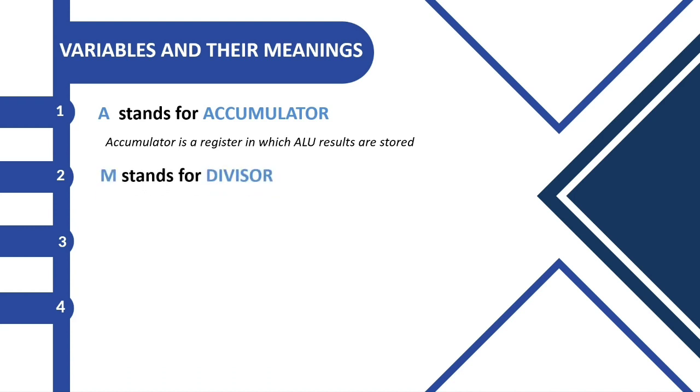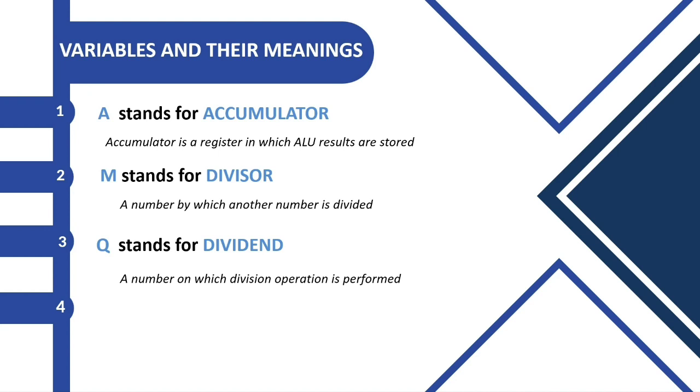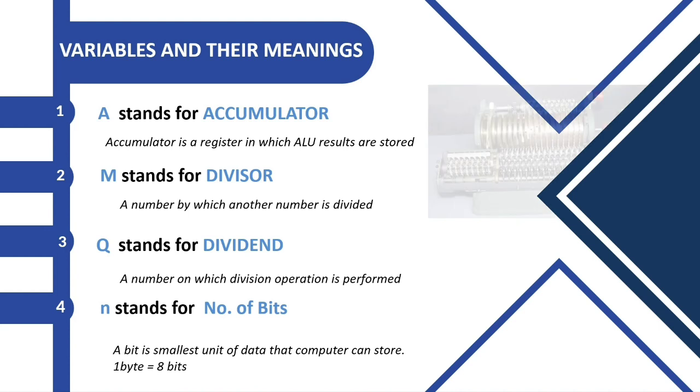Next is M. M stands for divisor. Divisor is a number by which another number is divided. Third is Q. Q stands for dividend. Q is a number on which division operation is performed. Next is N. N stands for number of bits. A bit is the smallest unit of data that a computer can store. One byte means 8 bits.